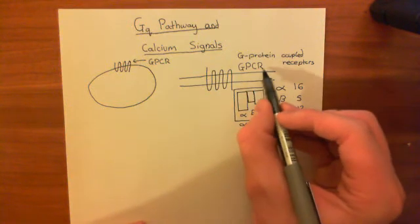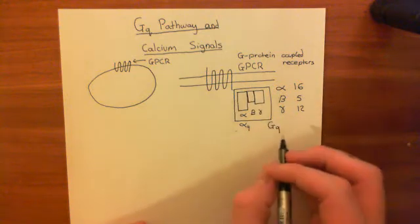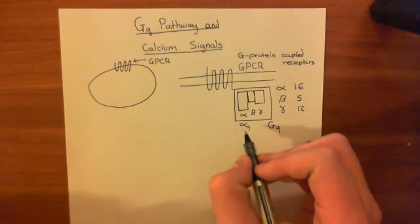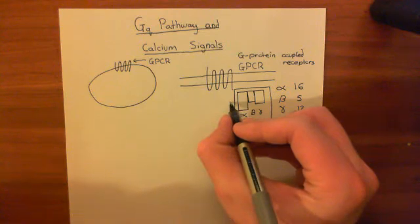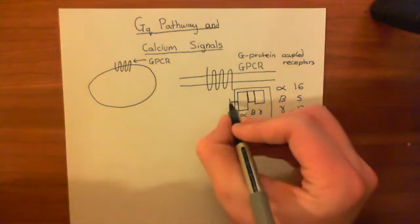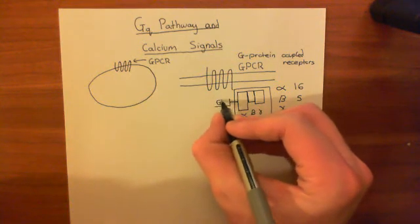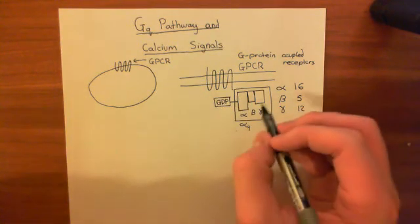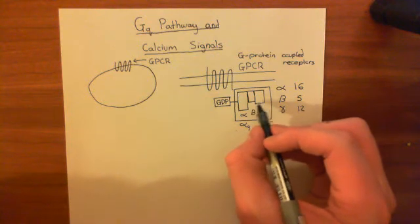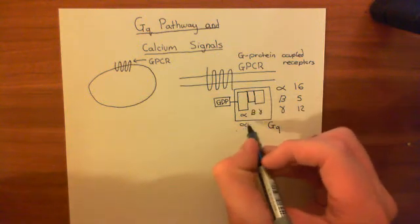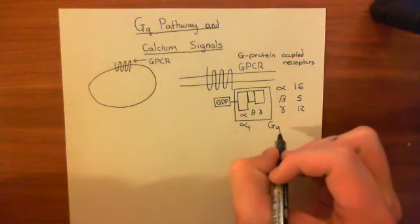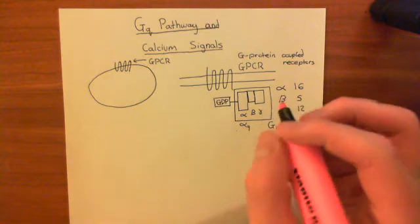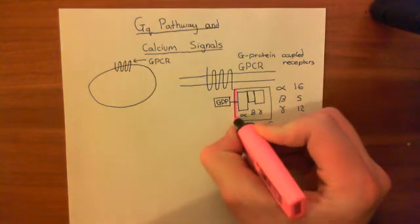We are picking a GPCR which is coupled to the GQ heterotrimeric G protein, meaning the alpha subunit is the alpha-Q subunit. Initially, the heterotrimeric G protein is inactive, which means that the alpha-Q subunit is bound to GDP. We don't care what the beta and gamma subunits are — if you have alpha-Q as your alpha subunit, then you are a GQ G protein.